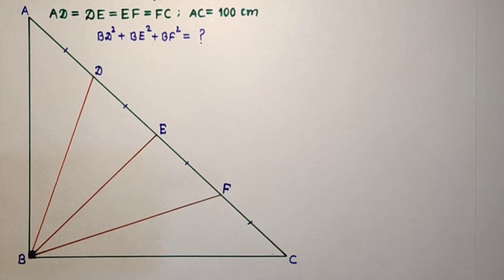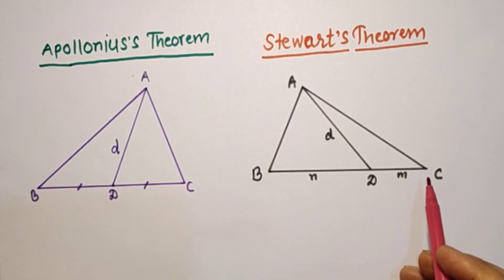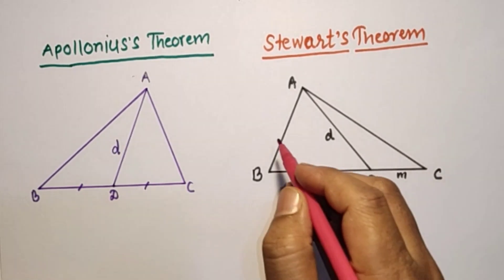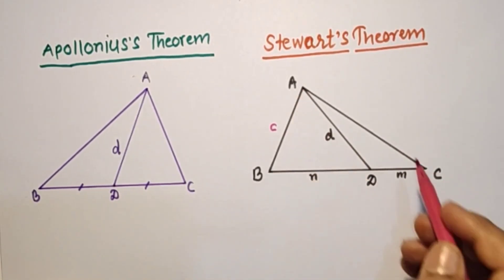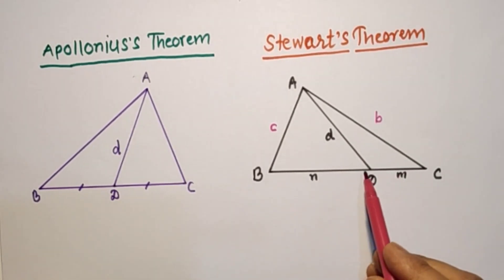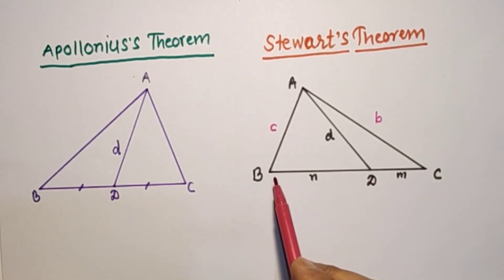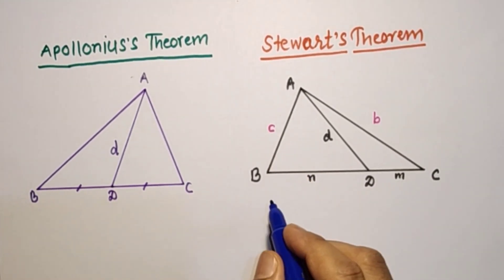We can solve this question by using two theorems. Both theorems are very famous — theorem one is Stewart's theorem and the other is Apollonius theorem. Before solving, we will briefly discuss these two theorems. For Stewart's theorem, this is vertex C, the side opposite to this vertex is c. Let us suppose AC is b, AD is d, DC length is M, and BD segment length is N.